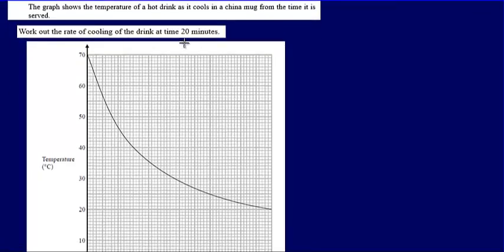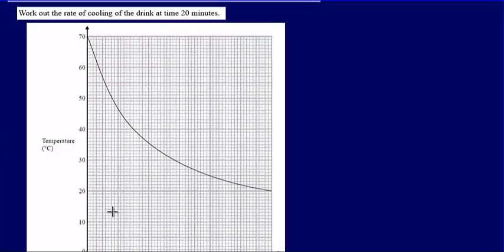We're asked to work out the rate of cooling of the drink at time 20 minutes. So what we're doing here is working out a rate of change, and when we have a curved graph, when we're looking to find a rate of change...